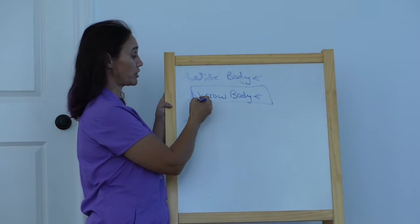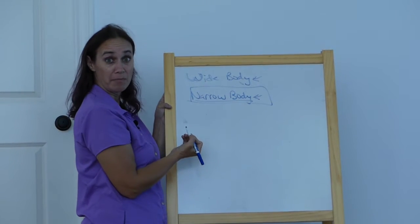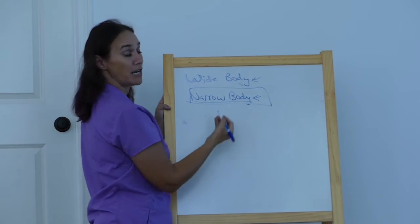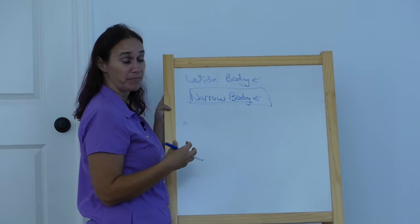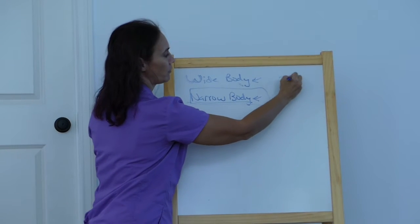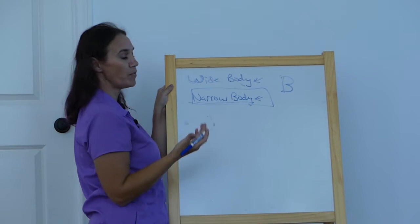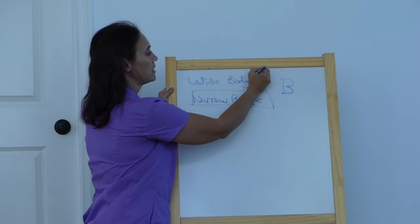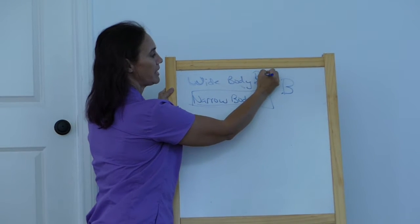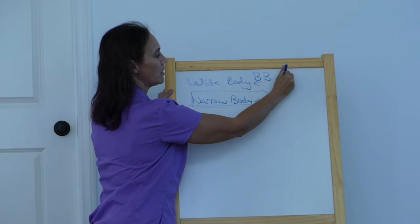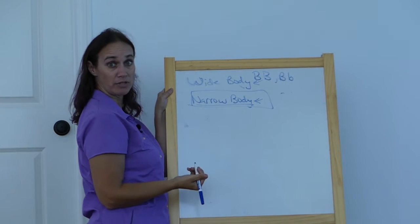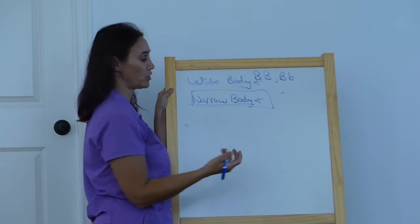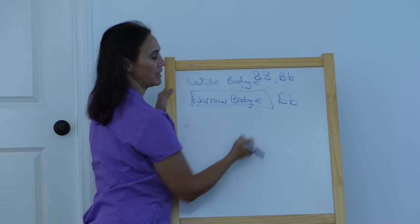We already determined that she would want to breed a narrow-bodied mandrake with another narrow-bodied mandrake. If we assign the letter B for the body type allele, then the wide body type tends to be dominant, so it would be either BB or Bb. If the narrow body is recessive, then the genotype would be bb.